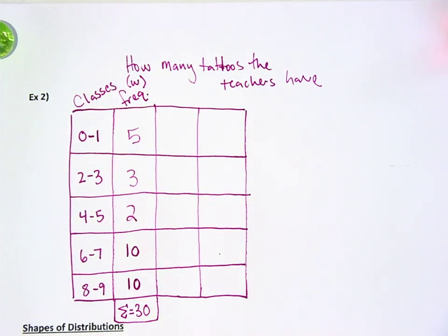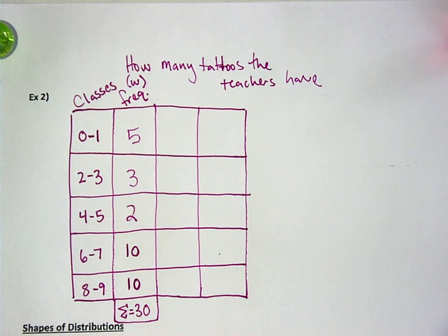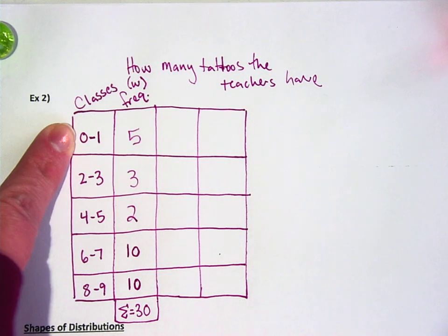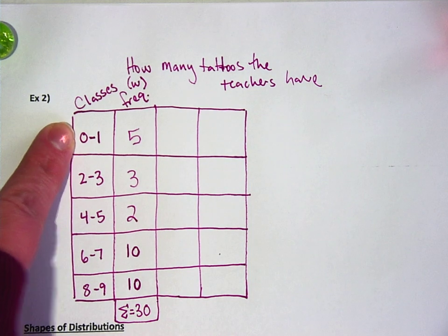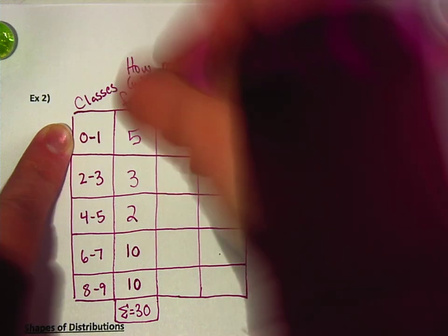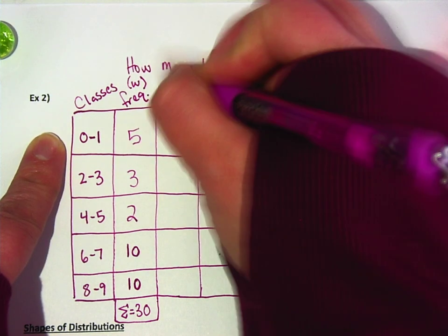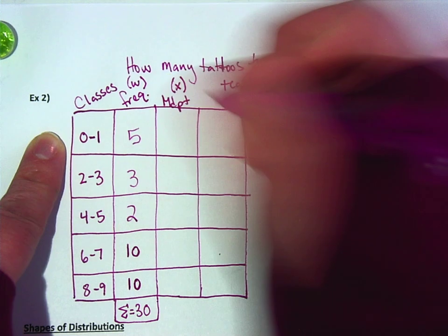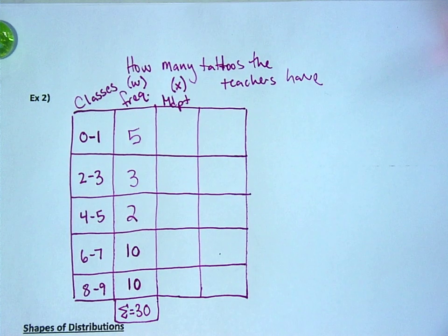So what number do you think we can pick to be representative of that class? Would you want to pick the ones in between those two numbers? Right, right in between, the midpoint. So we're picking the midpoint. Tegan, we're not picking the midpoint, okay? We're picking the number in between those two numbers, otherwise known as the midpoint.